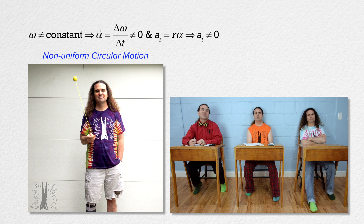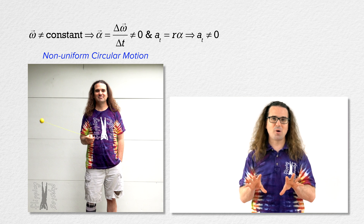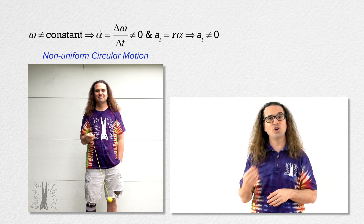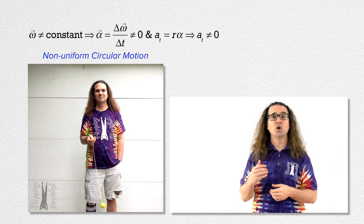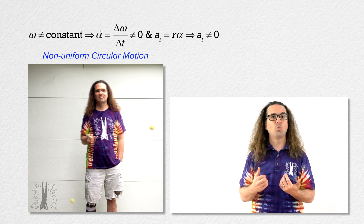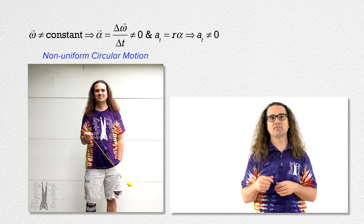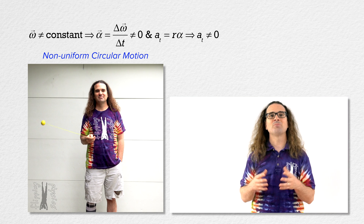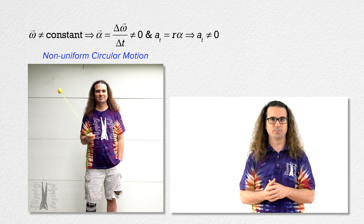The angular velocity of that ball is not constant? It sure looks constant. I know the ball looks like it could be moving at a constant angular velocity; however, when we analyze the forces acting on the ball, we will be able to show that the angular velocity of the ball cannot be constant and this must be non-uniform circular motion.